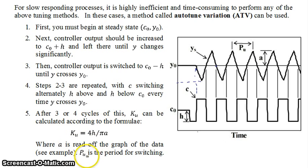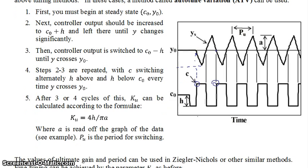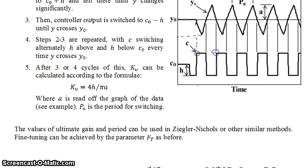And then your ultimate period is how long did it take you to switch. The period for switching would be from this point to the next similar point in the next wavelength. That will give you your ultimate period or ultimate gain. Once you have those, you can use something like Ziegler-Nichols or any other similar method that would use ultimate period or ultimate gain. Once you have your Ziegler-Nichols tuning parameter, you can fine-tune your controller using this parameter F_T as before.